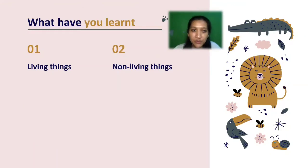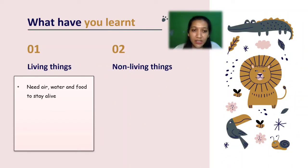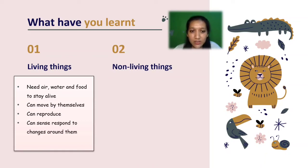It's the end of our lesson. So let's review what have you learned. Here we will differentiate between the living things and non-living things. So in living things, they need air, water, and food to stay alive. They can move by themselves, they can reproduce, they can sense and respond to the changes around them, and they can grow.